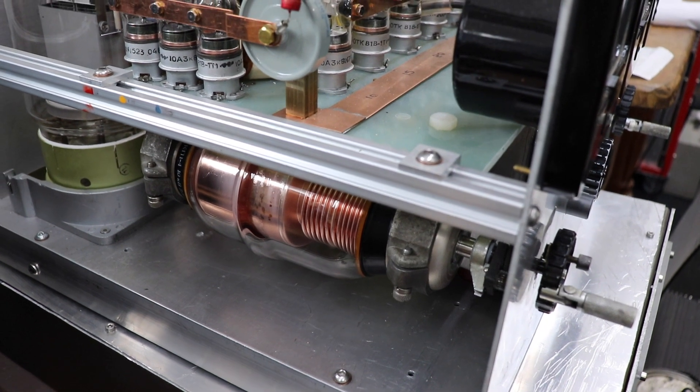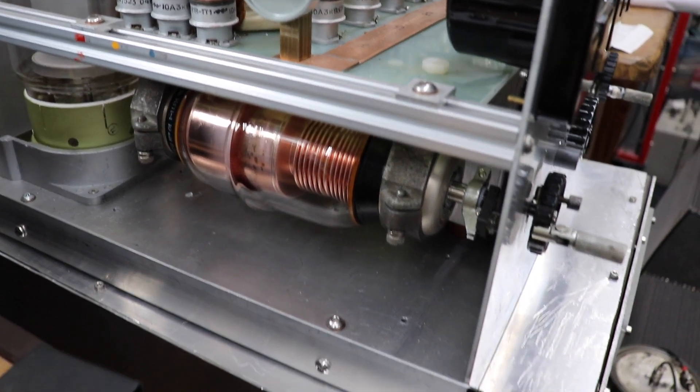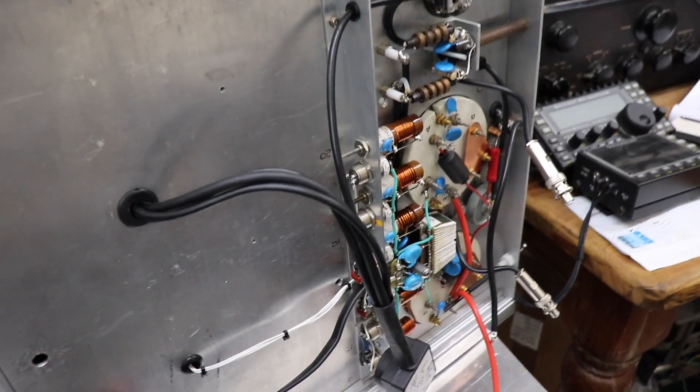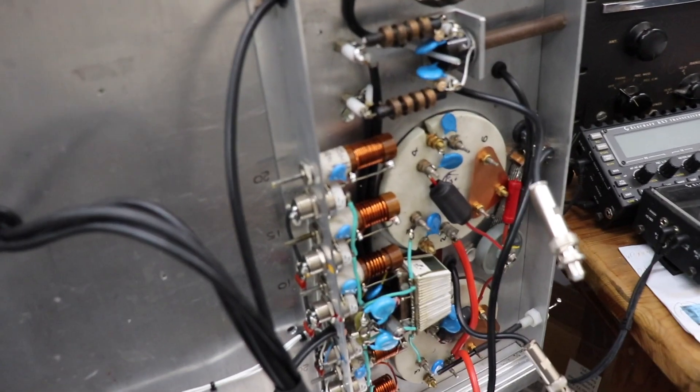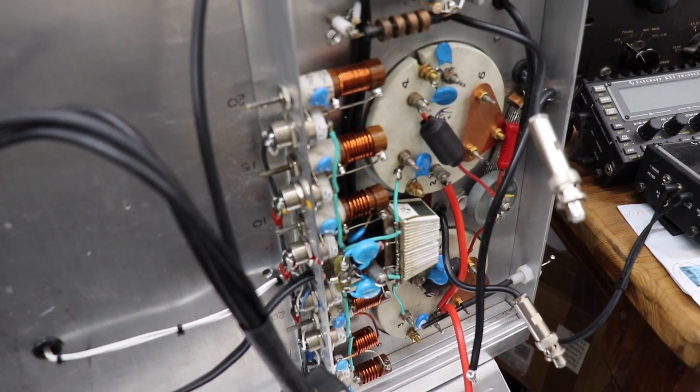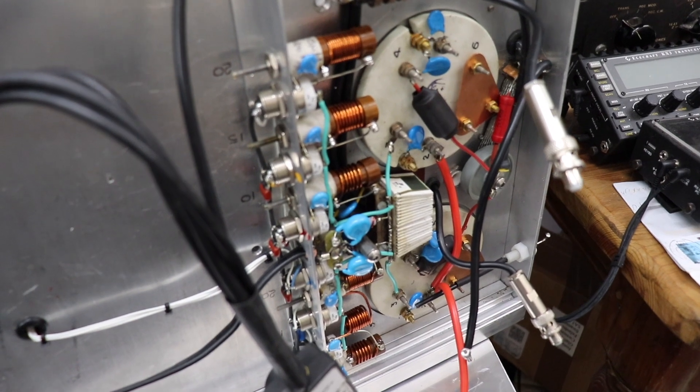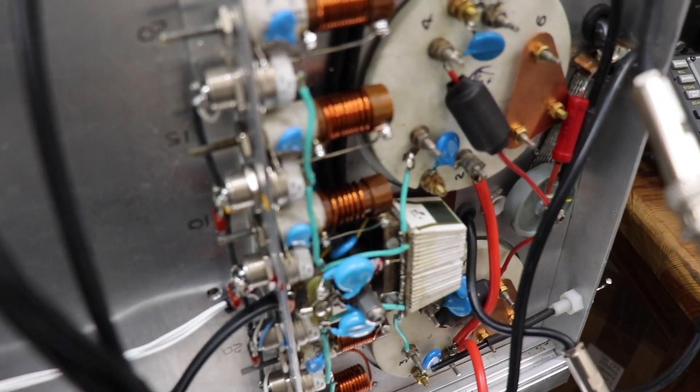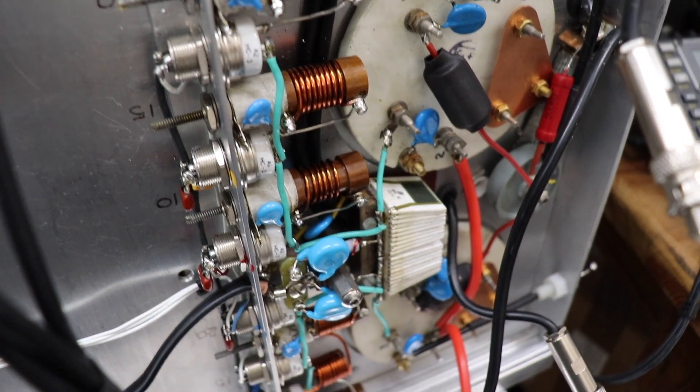Now we're going to turn this thing over and you can have a look at the underside. So underneath this amplifier you can see the tuner or the tuning coils for the input matching and he's done quite a nice job of all those vacuum relays there.